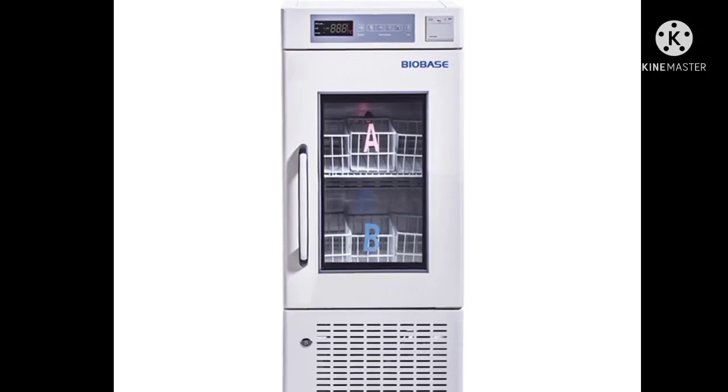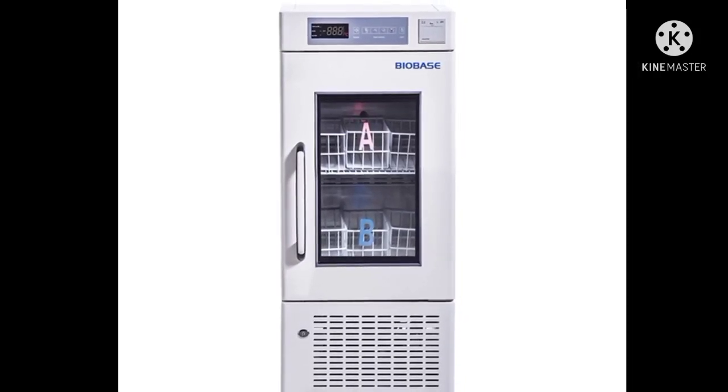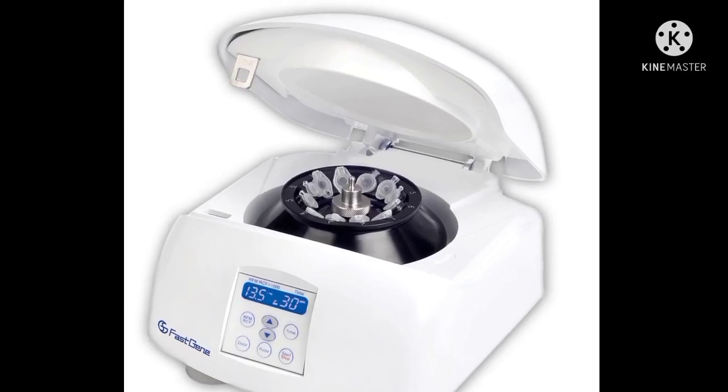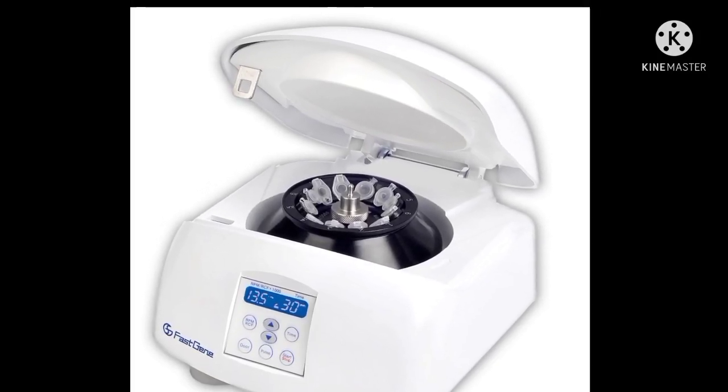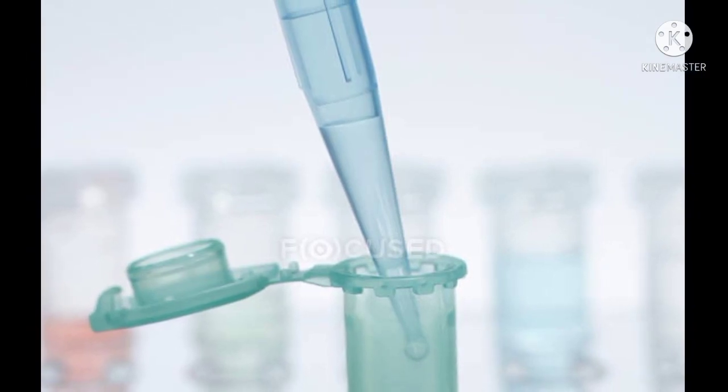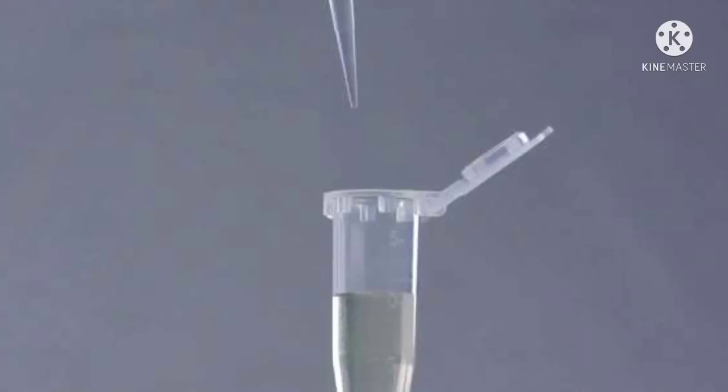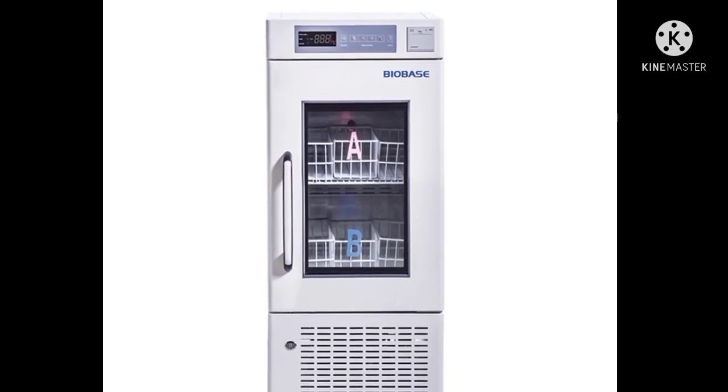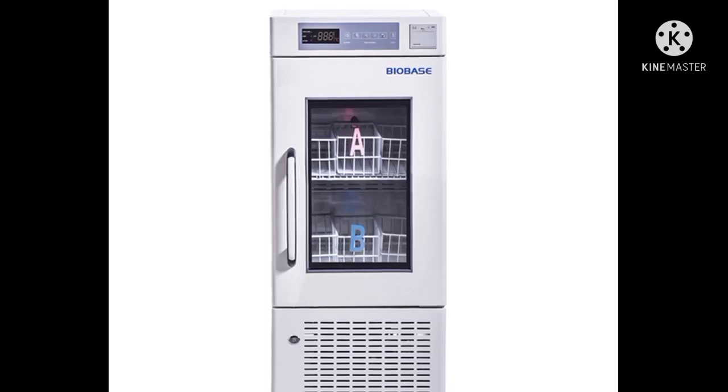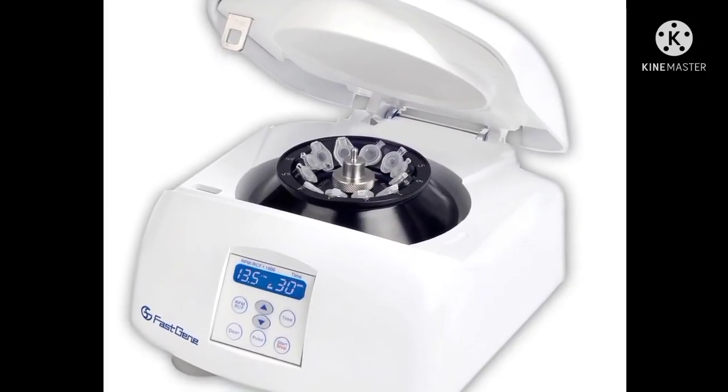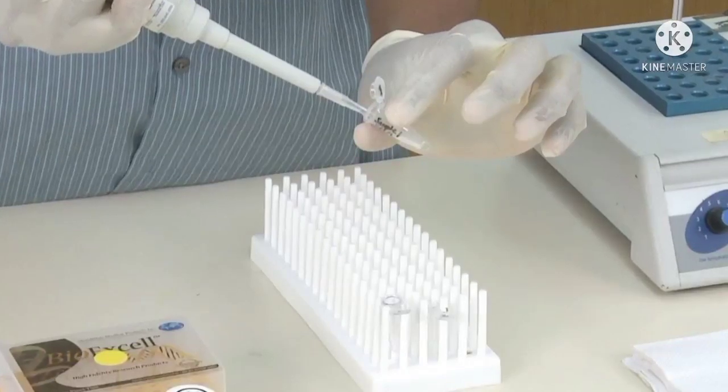Add 250 microliters of solution C2 and vortex for 5 seconds. Incubate at 4 degrees Celsius for 5 minutes followed by centrifugation. Avoiding the pellet, transfer up to but no more than 600 microliters of supernatant to a clean 2 ml collection tube. Add 200 microliters of solution C3 and 100 microliters of solution C4 to the supernatant and vortex for 5 seconds.